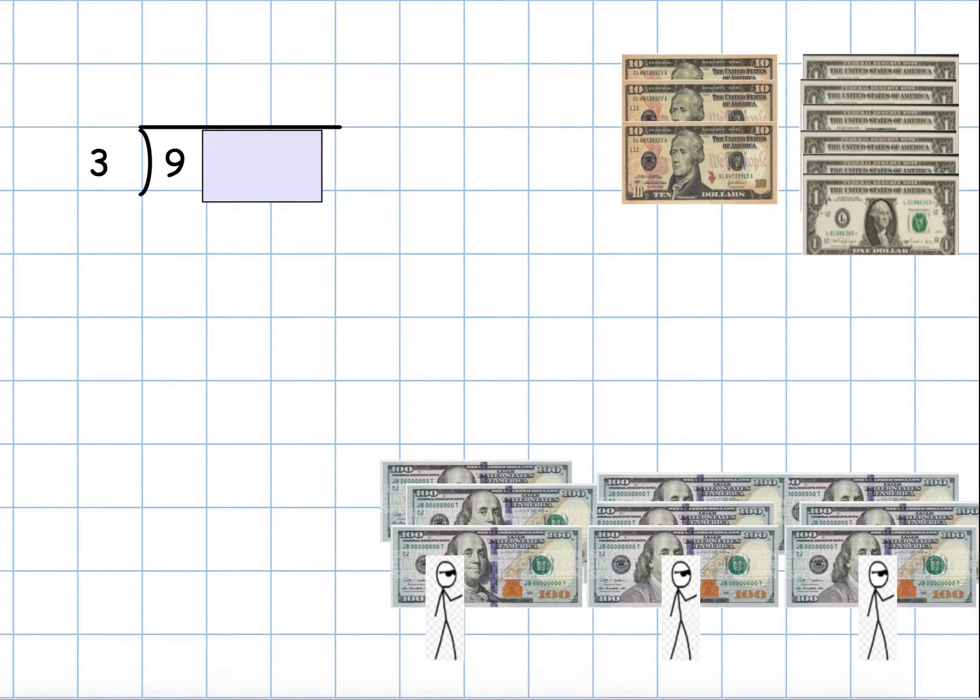What did I just do? I gave each friend three $100 bills. Notice I used up all of them. That's because three times three is nine, and now I don't have any $100 bills left.